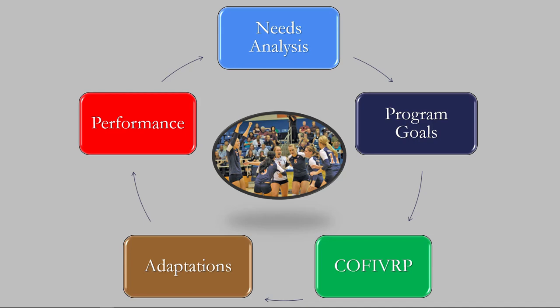This acronym COFERVERP says: your goal is A, so we modify these seven things in this exact fashion and you will get A as an adaptation. Hopefully that results in the change in performance you're looking for. Then you come back and redo the needs analysis to see what new goals you need. That's the cycle of program design. Athlete or not, we should always be training with a purpose.